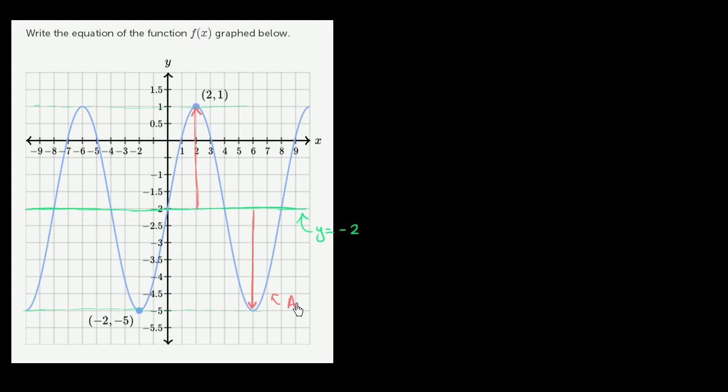So immediately, we can say, well look, this is going to have a form something like f(x) is equal to the amplitude 3.